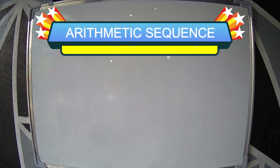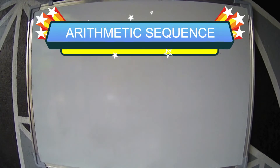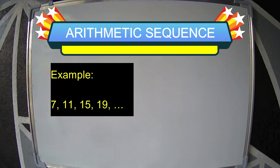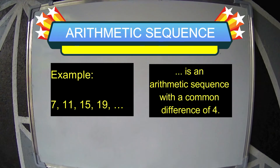An arithmetic sequence is a sequence whose consecutive terms have a common difference. The common difference, D, is identified by subtracting a term by its previous term. For example, 7, 11, 15, 19 is an arithmetic sequence with a common difference of 4.